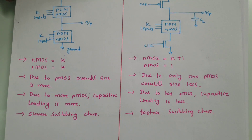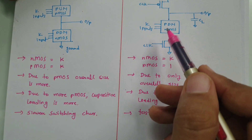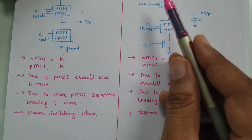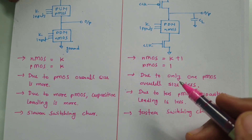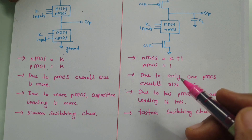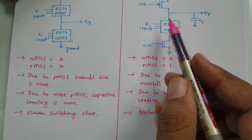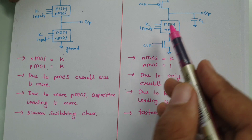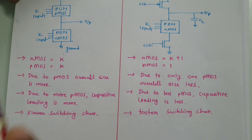There are some disadvantages with dynamic CMOS. When dynamic CMOS circuits are connected in cascade, there is a possibility of false operation. So there are cascading issues in dynamic CMOS, and those cascading issues are not present in static CMOS.